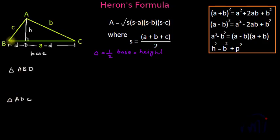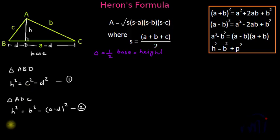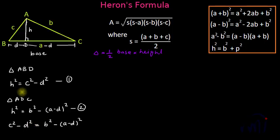We now have two right-angle triangles: triangle ABD and triangle ADC. From triangle ABD, h² = c² − d². From triangle ADC, h² = b² − (a − d)². Since both expressions equal h², it is clear that to find h we must first find the value of d.